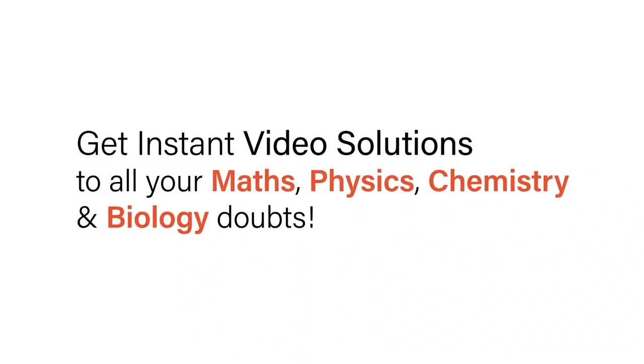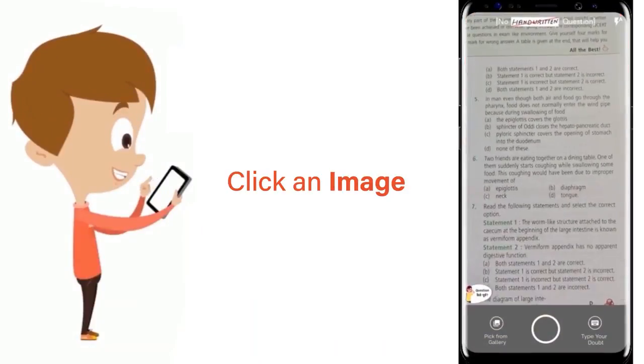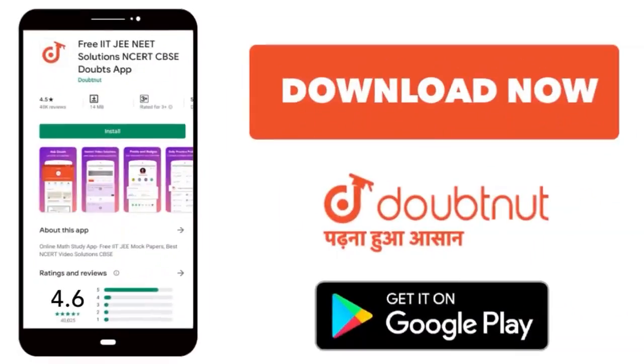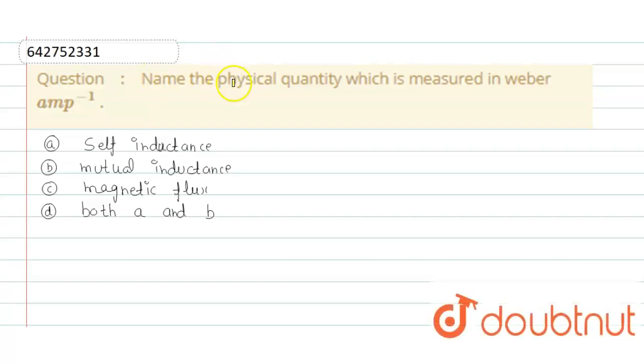With Doubtnet, get instant video solutions to all your maths, physics, chemistry, and biology doubts. Just click the image of the question, crop the question, and get instant video solution. Download Doubtnet app today. Problem is: name the physical quantity which is measured in weber ampere inverse.